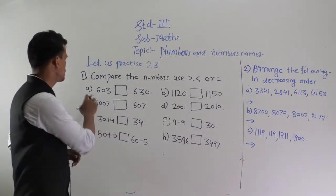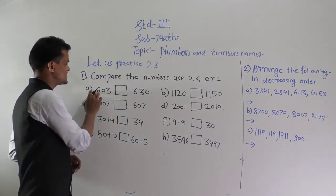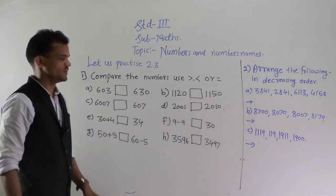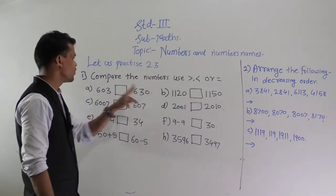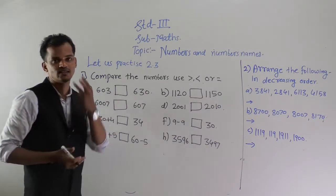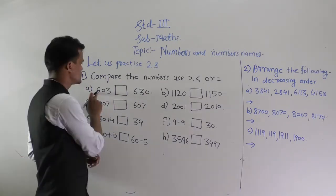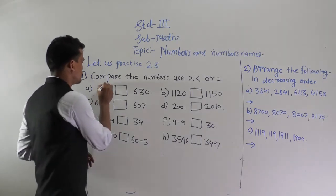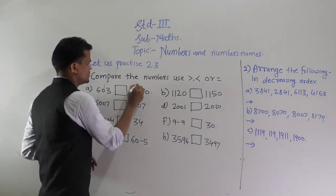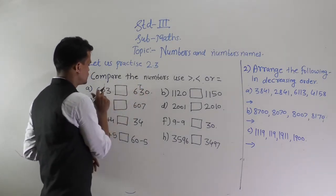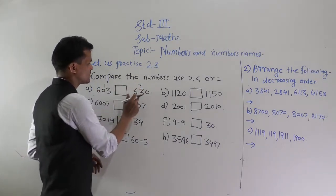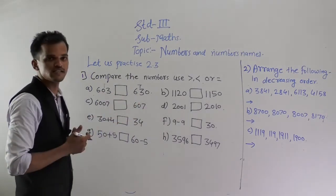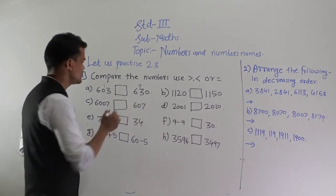First, part A: compare 603 and 630. Both numbers are 3-digit numbers. The hundreds digit is the same (6 in both). So compare the tens place digit — here 0 and here 3. So 630 is greater than 603.